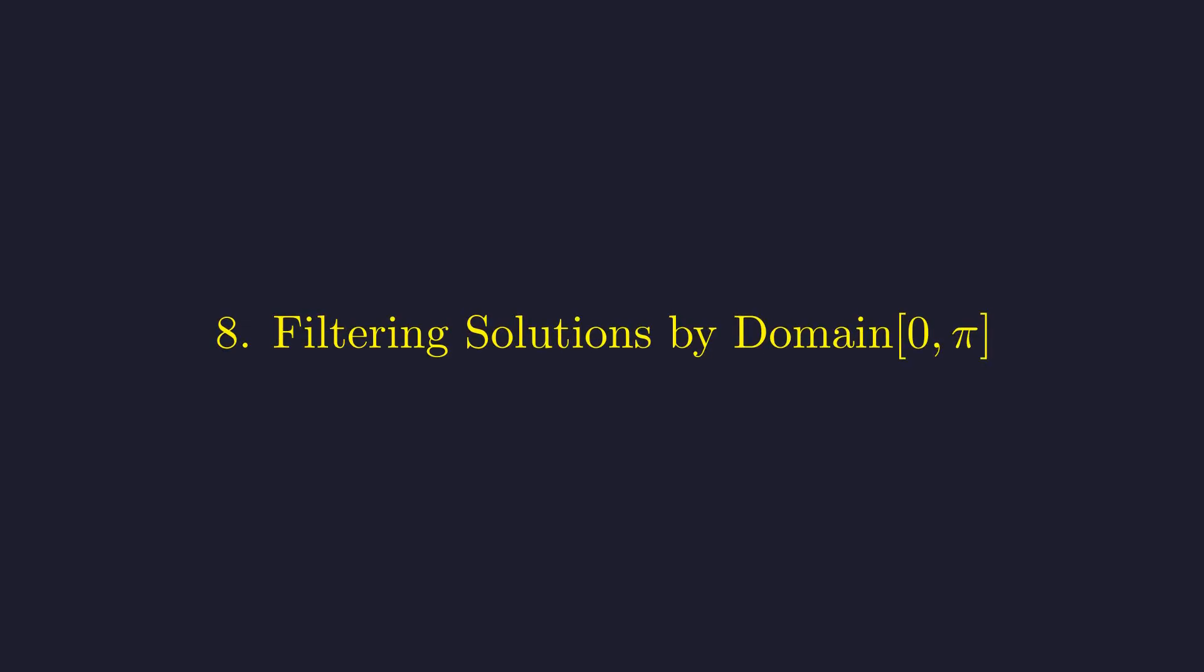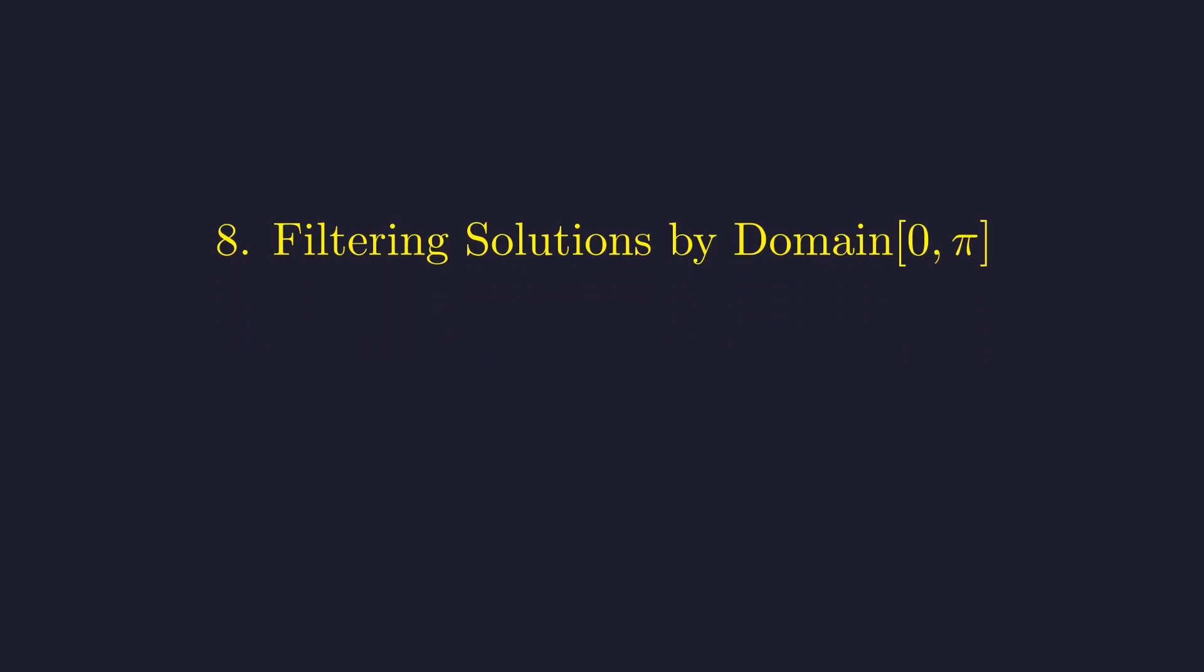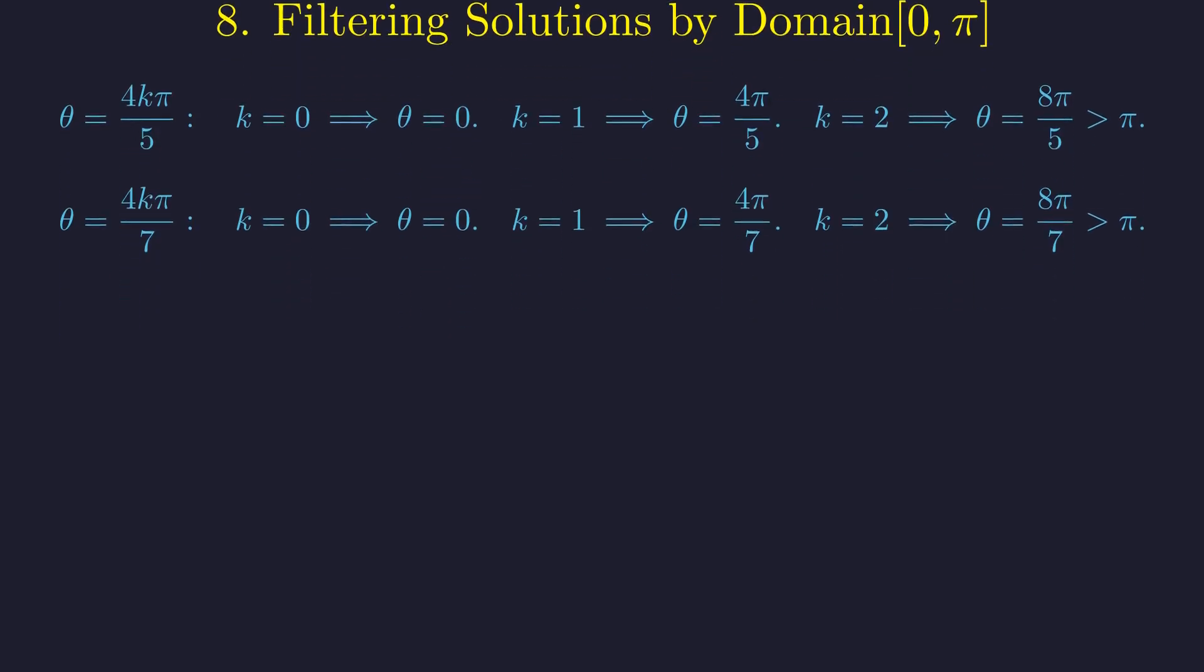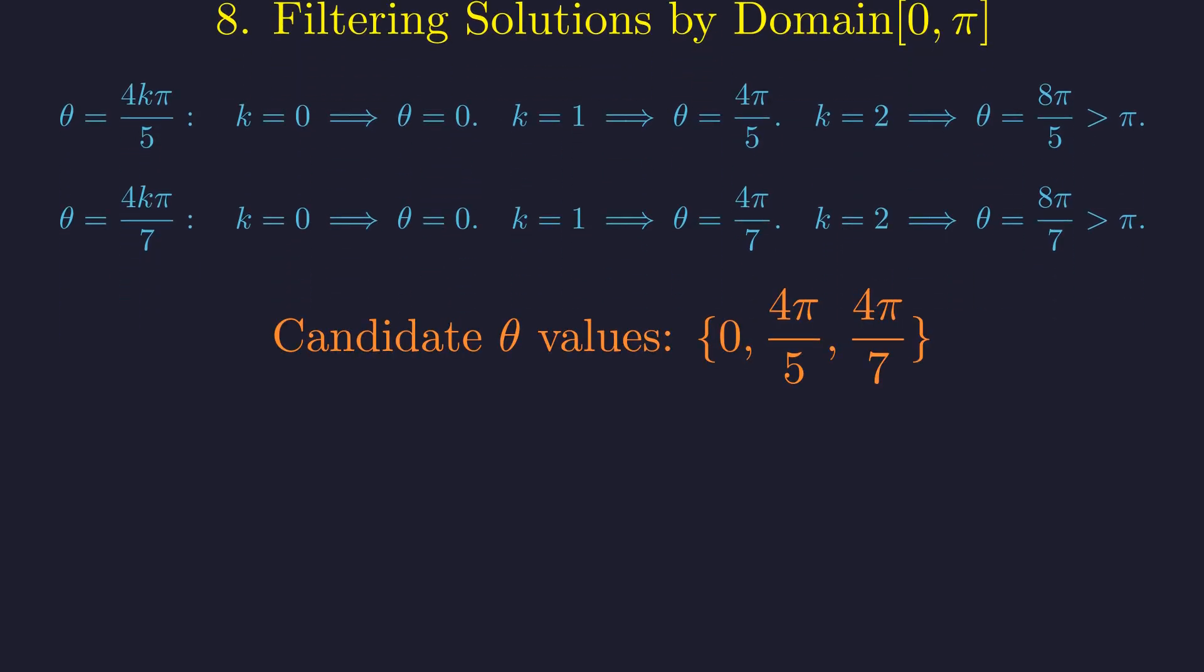These formulas give infinitely many solutions, but we only care about theta values between 0 and pi. From the first family, k equals 0 gives theta equals 0, k equals 1 gives 4 pi over 5, and k equals 2 gives 8 pi over 5, which is too big. From the second family, k equals 0 again gives theta equals 0, k equals 1 gives 4 pi over 7, and k equals 2 is again too large. So our candidates are theta equals 0, 4 pi over 5, and 4 pi over 7.